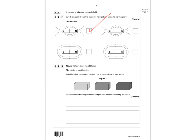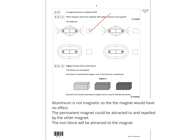Question 2.2: figure 3 shows three metal blocks — one is a permanent magnet, one is iron, one is aluminium. Describe how another permanent magnet can be used to identify them. Aluminium is not magnetic, so the magnet would have no effect. Iron is magnetic and will be attracted to the magnet. The permanent magnet can be both attracted and repelled — the key word is that it must be repelled. That gives three marks.